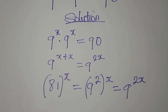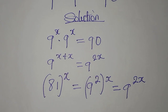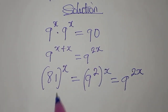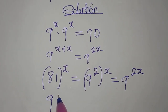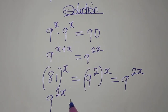So it's either you pick one of the bases and add the powers, or you pick one of the powers and multiply the bases. Either way, we equate this to 90, giving us 9 to the power of 2x equals 90.